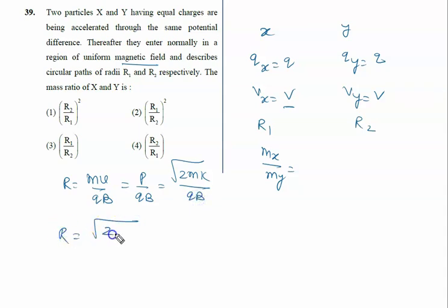r equals root of 2m times kinetic energy, which is q times voltage, upon qB. So both particles have the